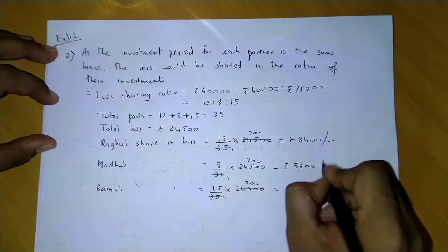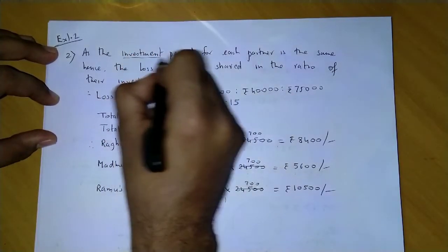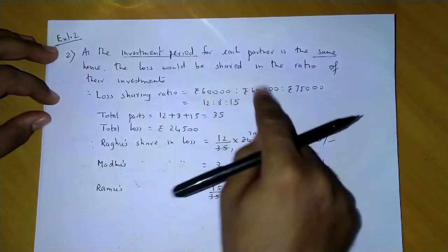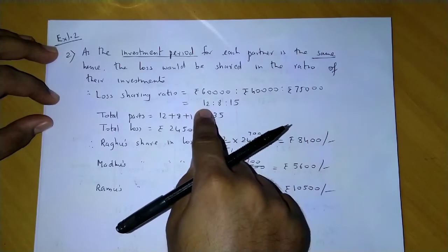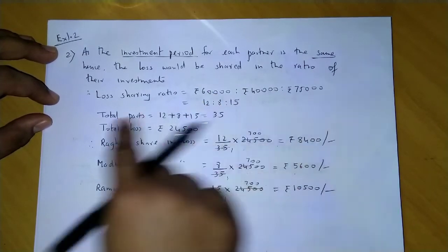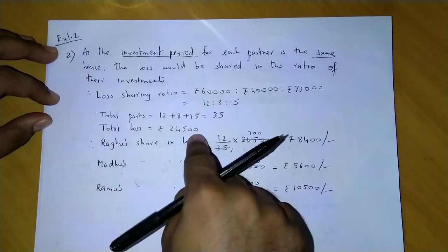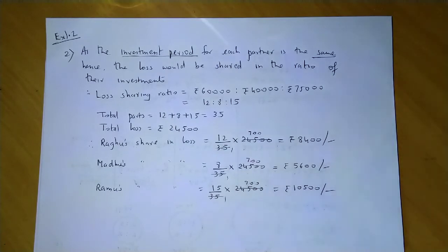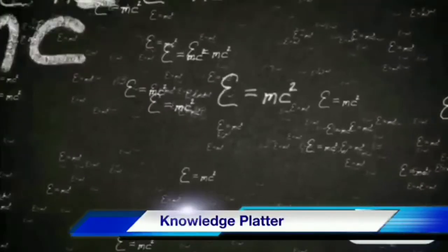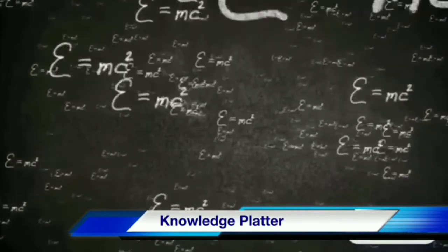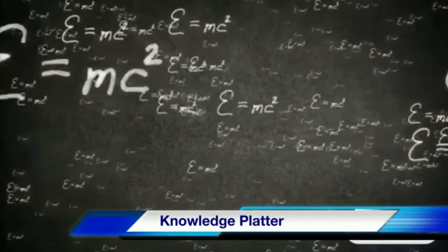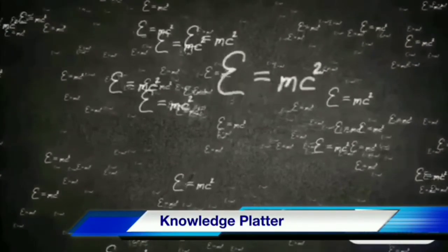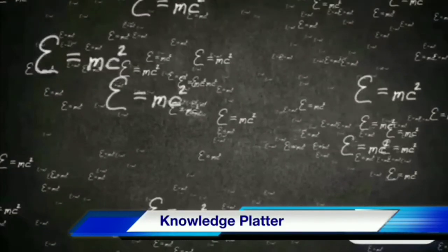Right. So, since the investment period is the same, we will find loss in which ratio? In their investments ratio. And you get the investment ratio as 12 is to 8 is to 15. Total parts 35, total loss 24,500. And then we have to calculate each partner's loss.